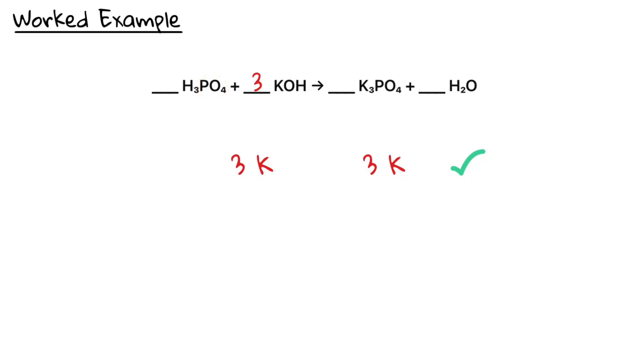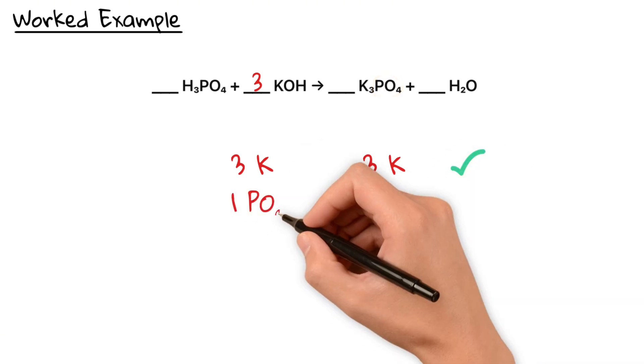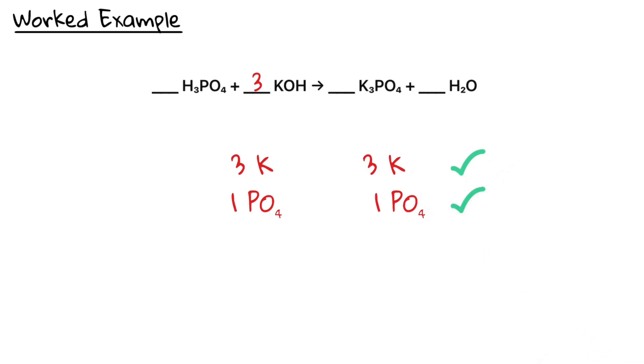Next, we look at the phosphate ions. Phosphate is a polyatomic ion. It stays together in both reactants and products. So we treat it as one unit. There's one PO4 on each side. So that's already balanced.